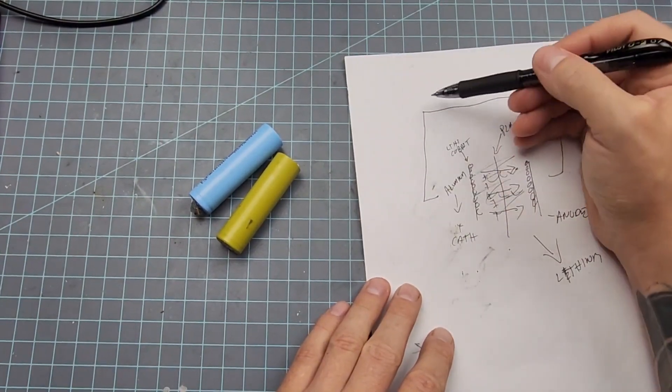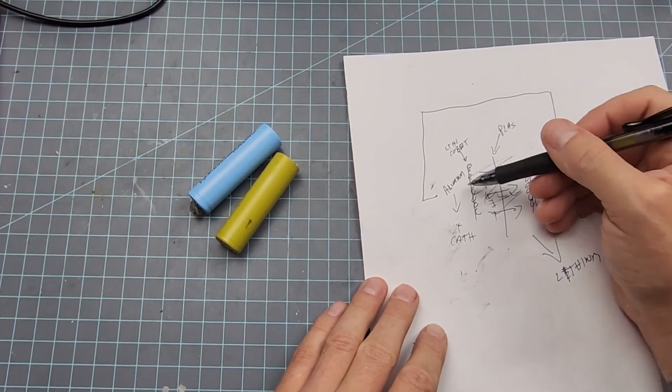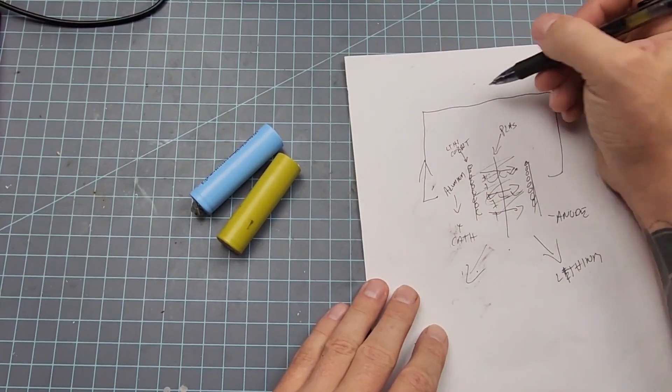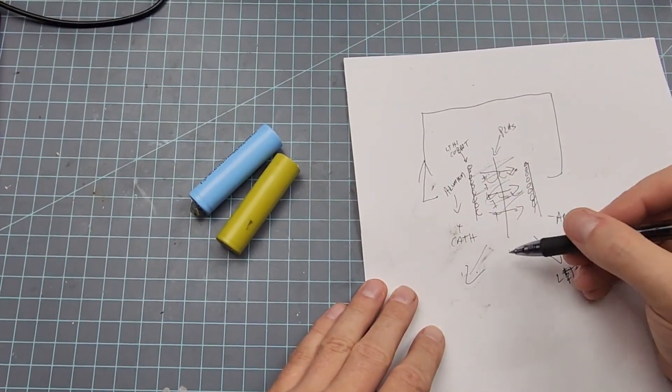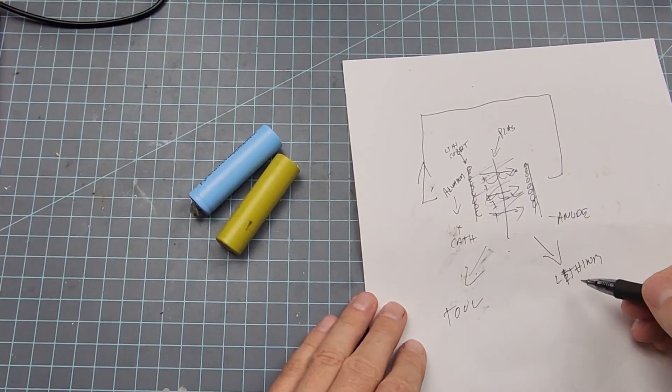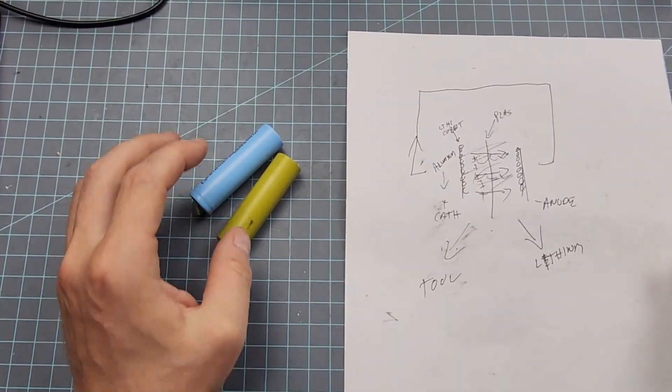When you charge it, it interacts this way. And when you discharge it into a tool - this is charging in this direction, positive to negative. And then negative to positive is when you discharge it to the tool. That's when it squirts out these lithium cobalt ions. So that's the basic operation.